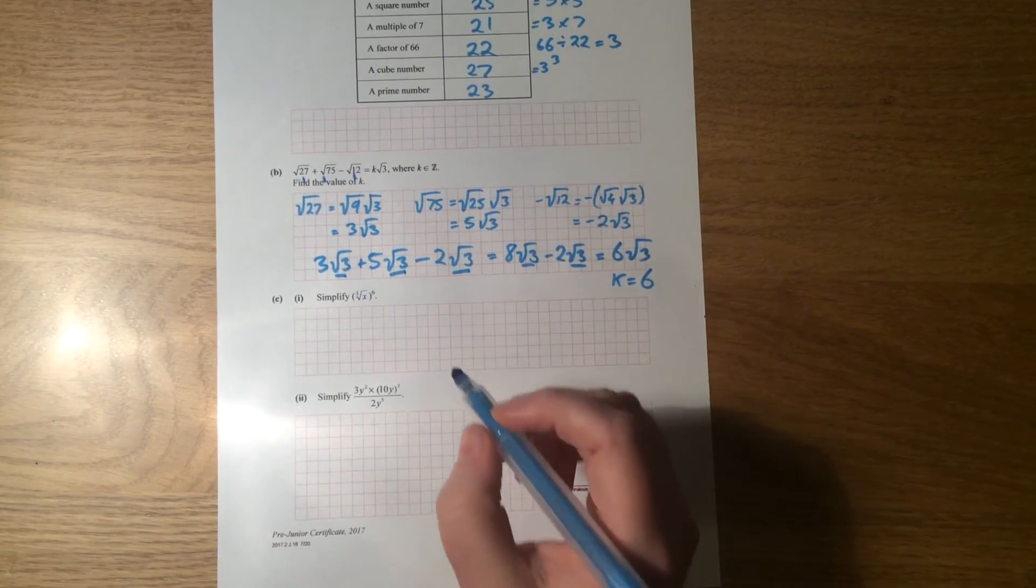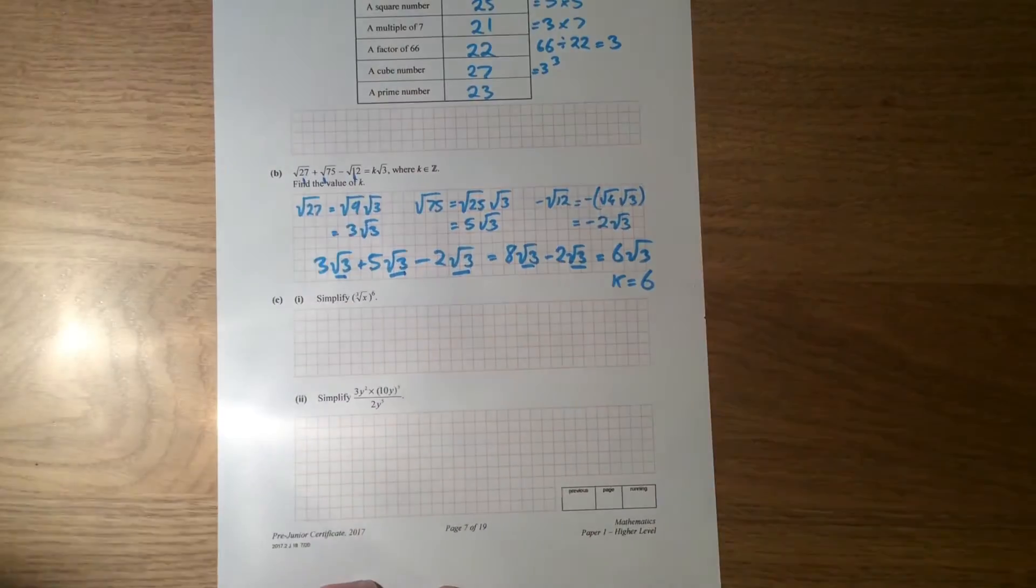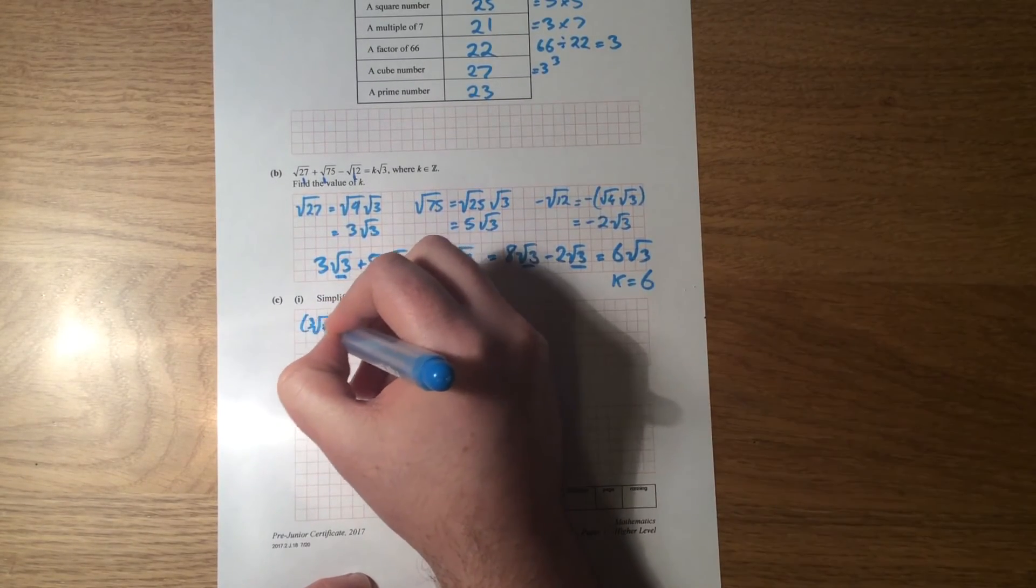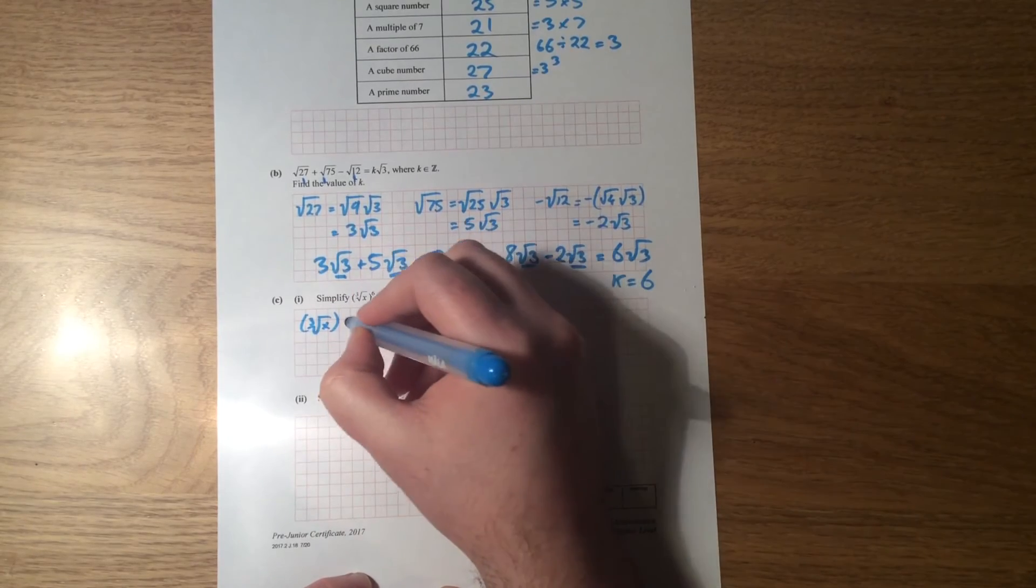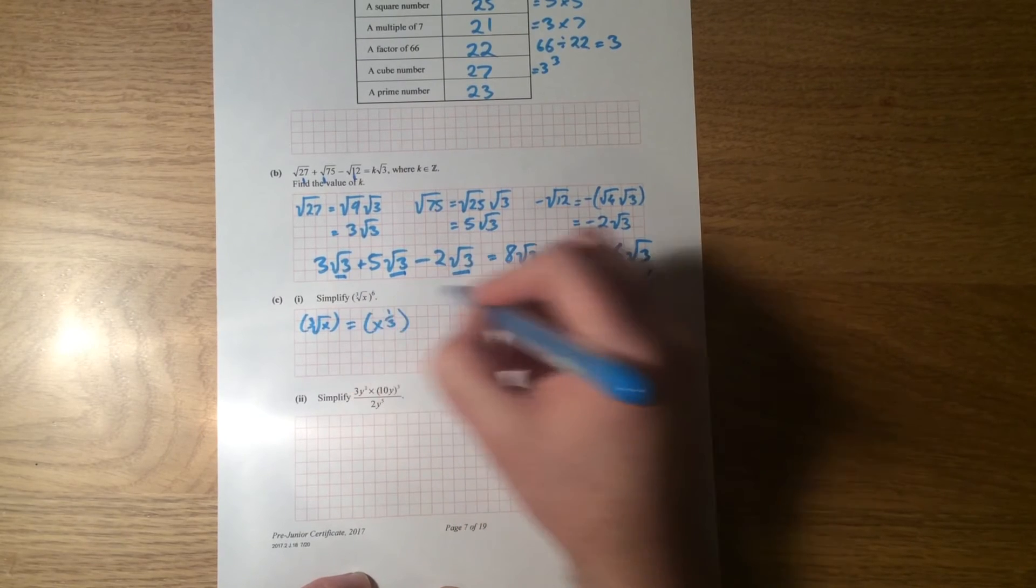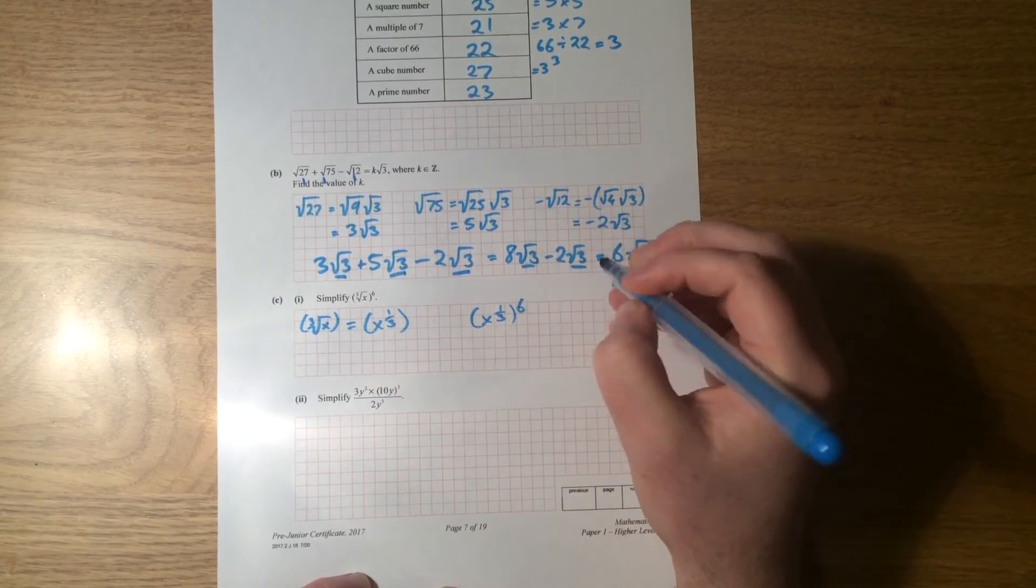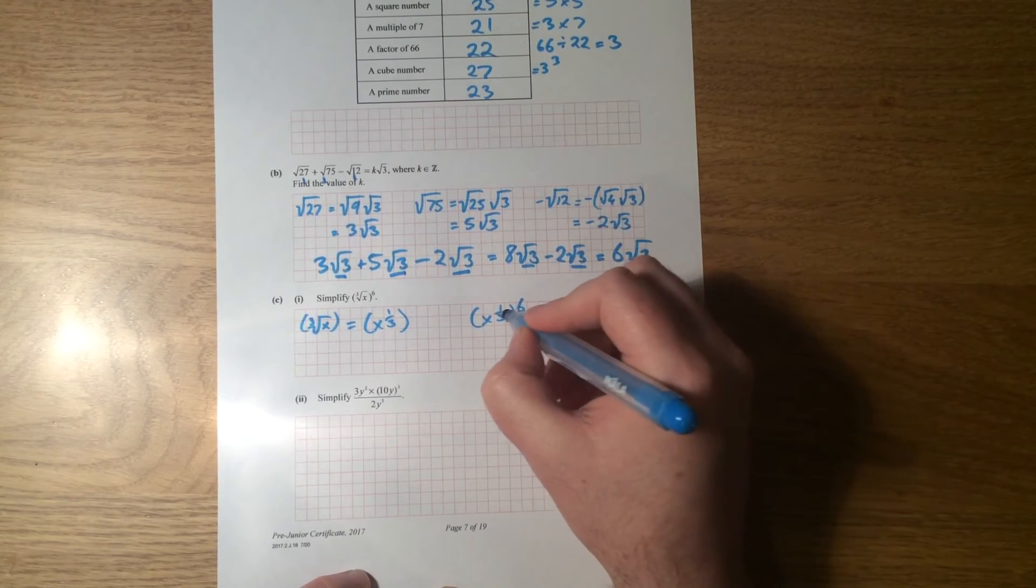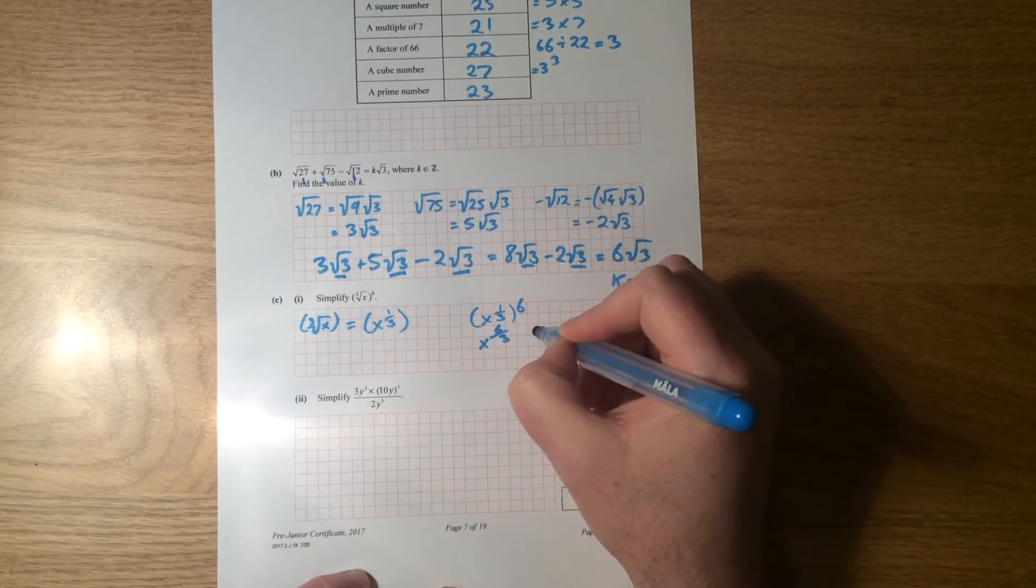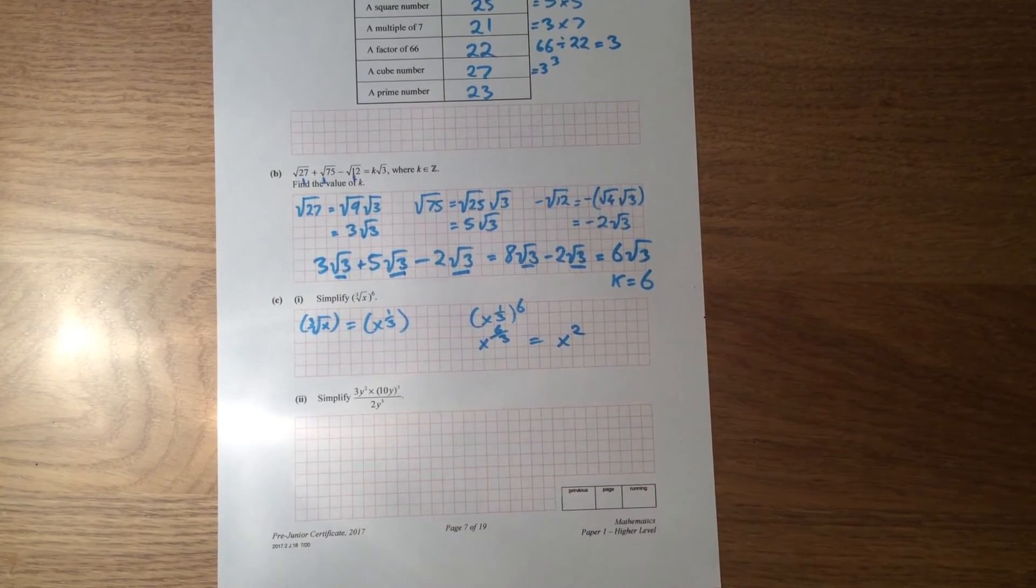Okay. Let's have a look at the next part. Simplify cube root of x to the power of 6. Okay, so you need to know a little bit about your laws of indices here, or laws of surds. And the cube root of x is the same as x to the power of a third. All right, which means that I can change this to x to the power of a third, and all of that is to the power of 6. Remember your laws of surds again, which is the same as x to the power of 1 over 3 multiplied by 6, which is just 6 over 3. 6 divided by 3 is 2. So you get x to the power of 2. Simplify it to x squared.